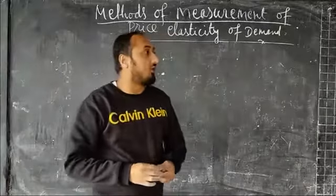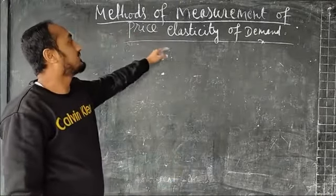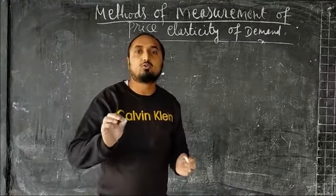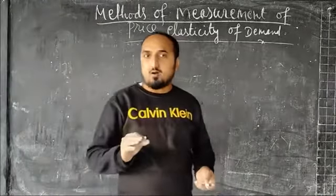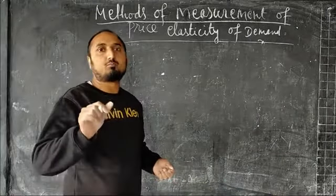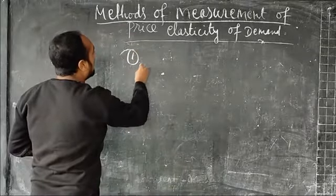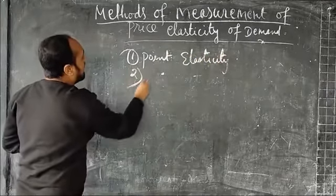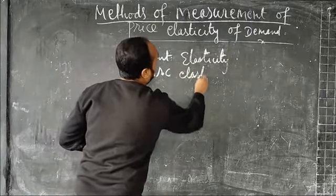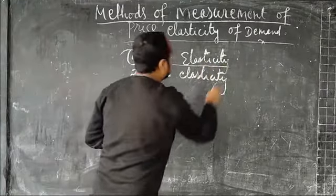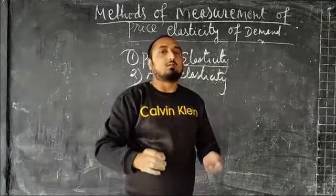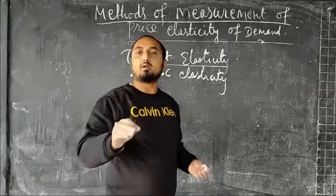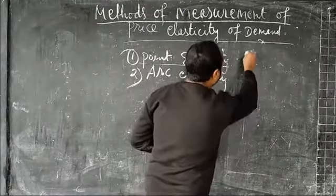Today I am going to start a new topic: methods of measurement of price elasticity of demand. We know that the elasticity of demand is different for different goods. The measurement of price elasticity of demand can be looked at from two viewpoints: number one is point elasticity, and number two is arc elasticity. We are going to see what point elasticity is. Point elasticity means when the elasticity of demand is measured at a particular point on the demand curve, then it is called point elasticity. We can explain this concept with the help of a diagram.